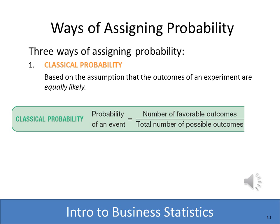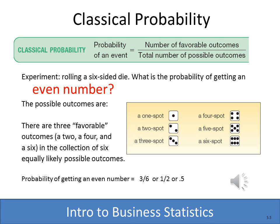So here's how classical probability works. We're going to do an experiment — roll a die — and figure out what is the probability of getting an even number. The possible outcomes are one, two, three, four, five, or six. We're looking for an even number, so there are three favorable outcomes out of a total of six possible outcomes. The probability of getting an even number using classical probability would be three divided by six — three-sixths, one-half, or 0.5 — a 50% probability of getting an even number.